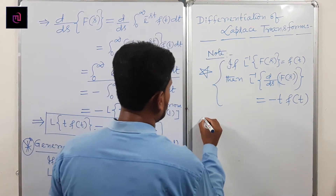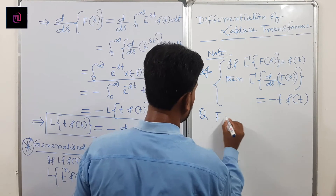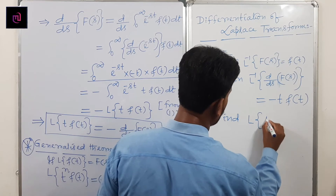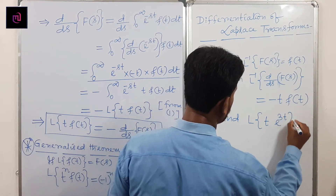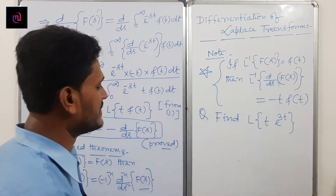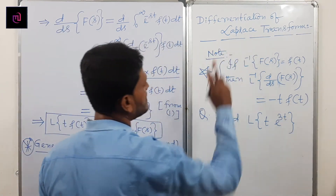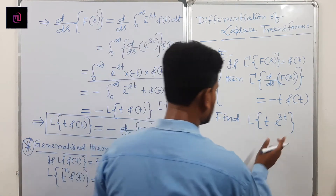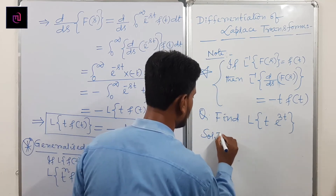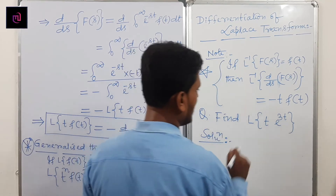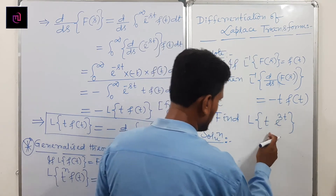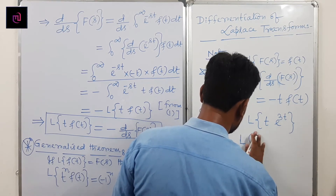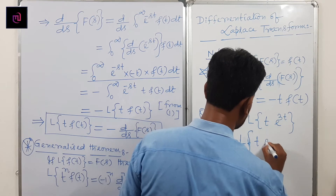Now let us do a problem. Find Laplace of t·e^(3t). We will use the differentiation of Laplace transform method. Here t has power 1, so we apply Laplace of t·f(t) = minus d/ds of F(s). Comparing, f(t) = e^(3t).